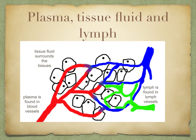You've come across the terms plasma, tissue fluid, and lymph — what is the difference? These three fluids are very similar in composition, but they occur in different places in the body. Plasma occurs within the blood vessels — it's the liquid part of blood. Tissue fluid is plasma that has left the blood vessels and surrounds the tissues. Lymph is found in the lymph vessels.